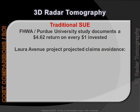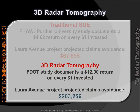Traditional SUE has proven success rates with national average ROIs of $4.62 per dollar invested. These figures were compiled before the invention of radar tomography. When extrapolated for the previous example project, a potential ROI of more than $67,000 was realized with traditional SUE. A more recent study incorporating the benefits of 3D RT offers an ROI of $12 per dollar invested. When extrapolated for the previous example project, a potential ROI of more than $200,000 was realized with 3D RT. This figure is easily borne out with the discovery of the buried trolley tracks within the project site.